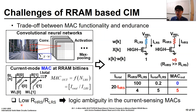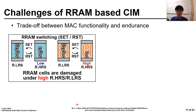Thus, a low on-off ratio leads to logic ambiguity in the current sensing MACs, thereby degrading the accuracy of AI systems. To support error-free MAC functionality with an RRAM array, the on-off ratio should be sufficiently high. However, the endurance of RRAM should also be considered in RRAM-based CIM architectures. The formation and rupture of conductive filaments over write operations gradually damage RRAM cells. In particular, if the change of the filament is drastic due to a high on-off ratio, higher damage is accumulated.